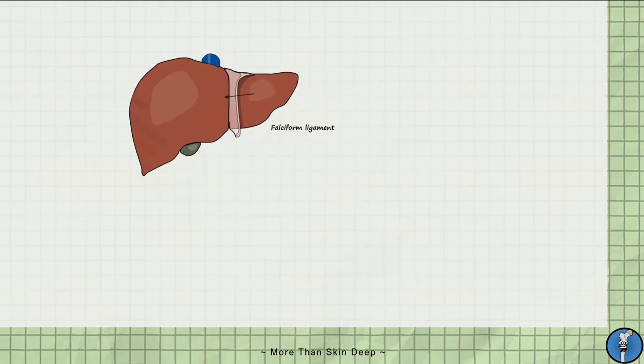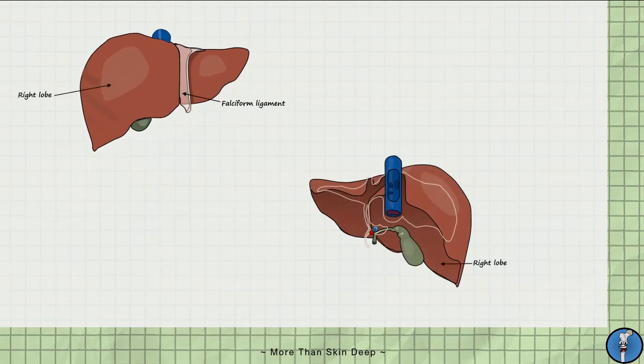Next is a posterior view of the liver. To orientate ourselves, here are the right and left lobes. However, on the posterior aspect, the liver has two more lobes. These are the quadrate and caudate lobes.